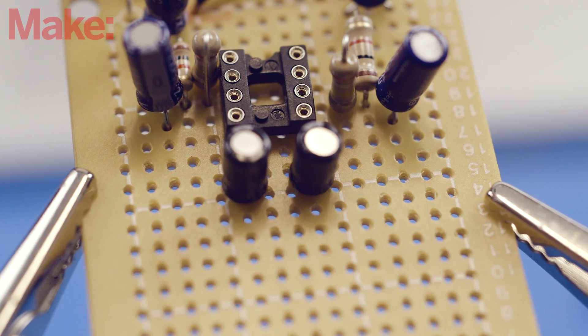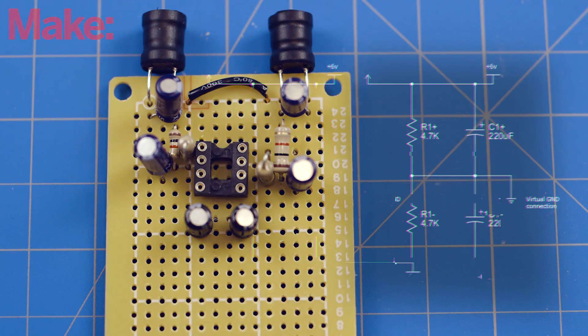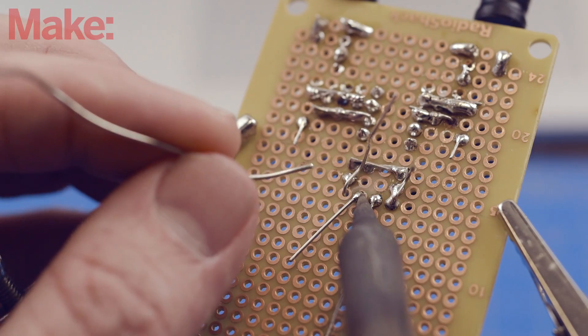Then add the 100 microfarad capacitors. These work as part of the virtual ground circuit. After that, add the 100kohm resistors, which act as a voltage divider.